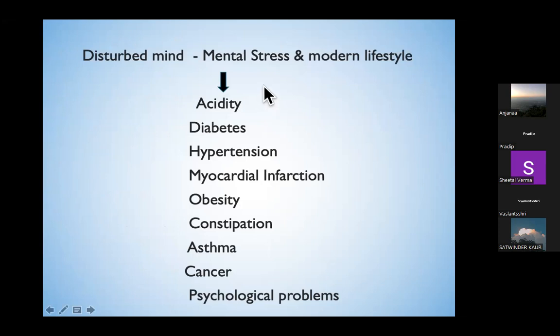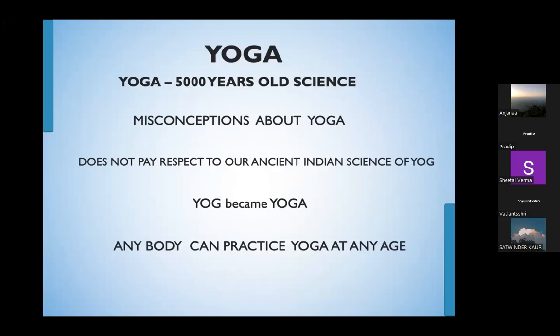Disturbed mind, mental stress, and modern lifestyle disorders — acidity, diabetes, hypertension — are all caused by mental stress. If the trigger to the hypothalamus is removed, the mind becomes calm, sympathetic activity decreases, parasympathetic activity increases, and you get rid of the diseases. This can be practiced through yoga.